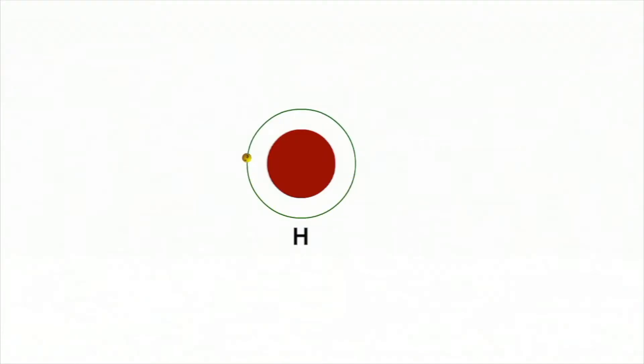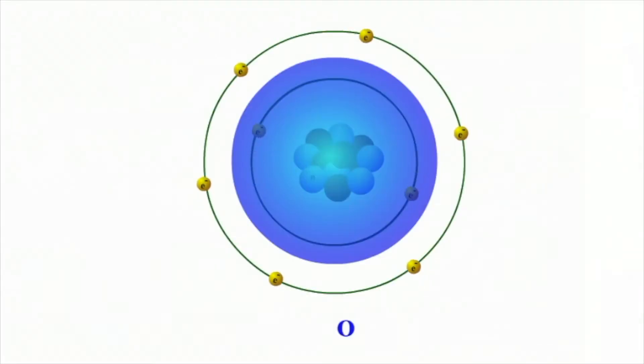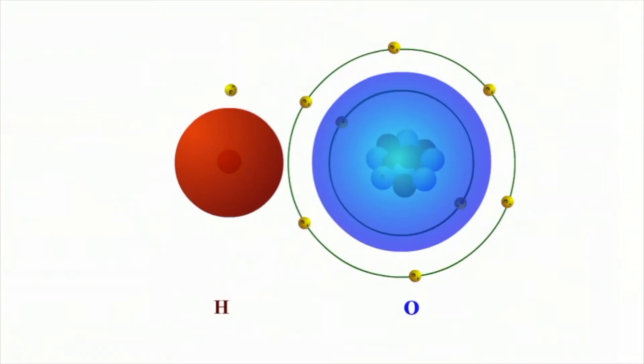Hydrogen has one valence electron. It requires another electron to have the stable configuration of helium. Oxygen has six valence electrons. It requires two electrons to complete its outer electron shell according to the octet rule. When hydrogen reacts with oxygen, the hydrogen atom shares its one electron with the oxygen atom. Oxygen in turn shares one of its electrons with the hydrogen atom.